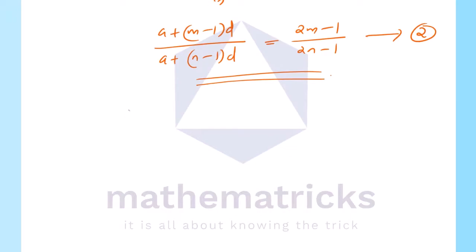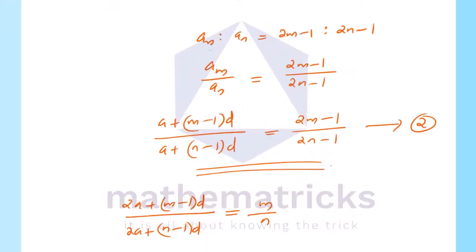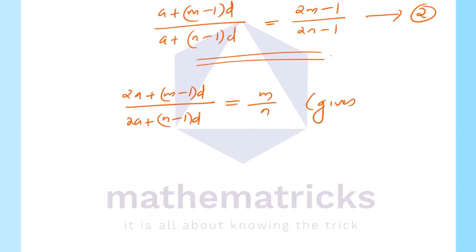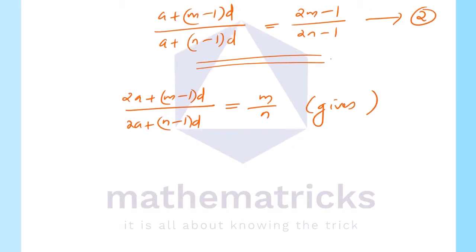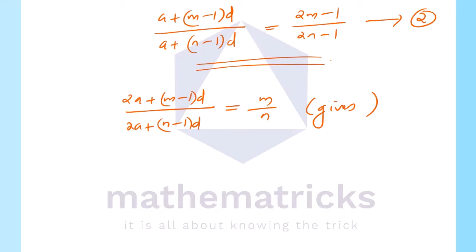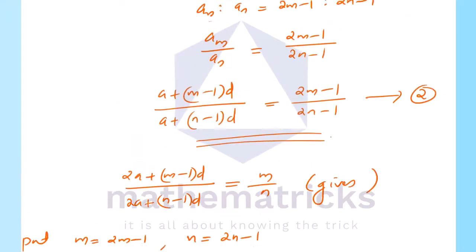We will start from equation 1: 2a plus m minus 1 into d divided by 2a plus n minus 1 into d equals m divided by n. Now I will substitute M with 2M minus 1 and N with 2N minus 1. We put the right side as 2M minus 1 divided by 2N minus 1.